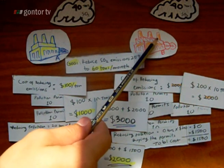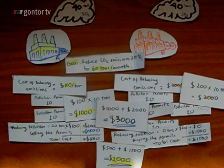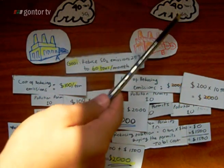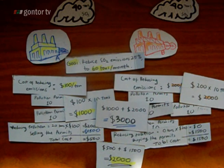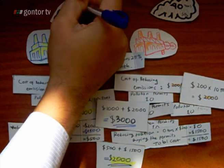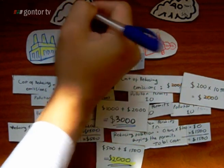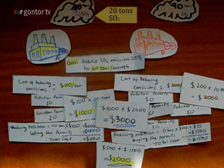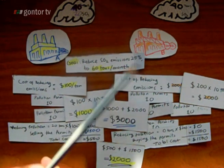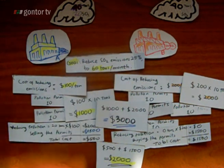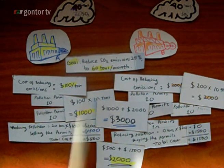Company B doesn't need to change their machines — they still use the old machine with the same emission of 40 tons of sulfur dioxide. Company A now has 20 tons of sulfur dioxide per month. The goal was to reduce sulfur dioxide emissions by 25% to 60 tons per month. We achieve that goal with lower total cost, so everyone is better off.